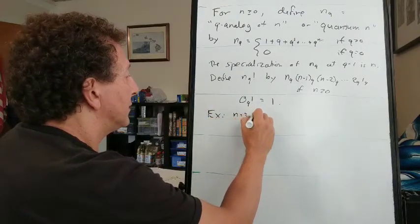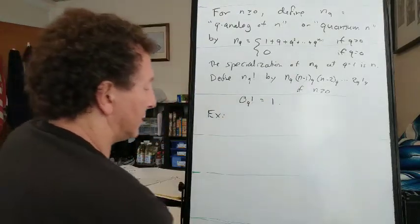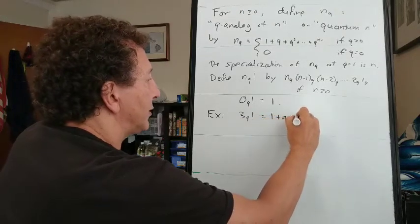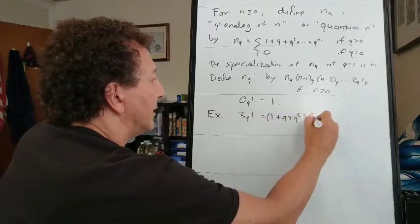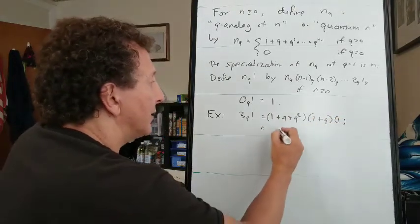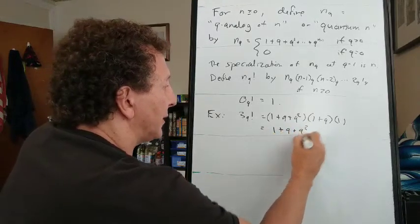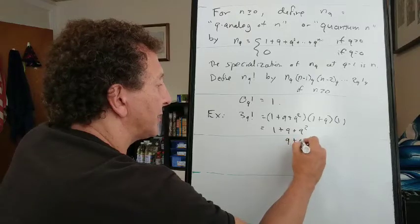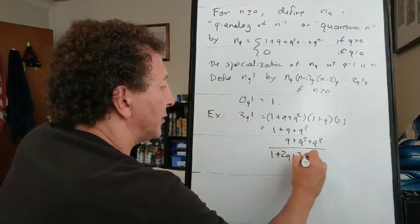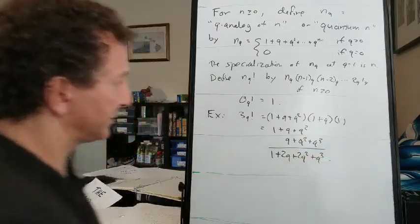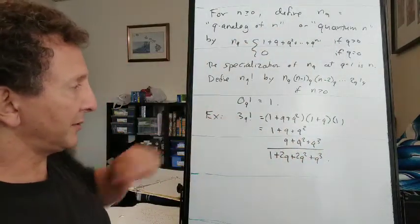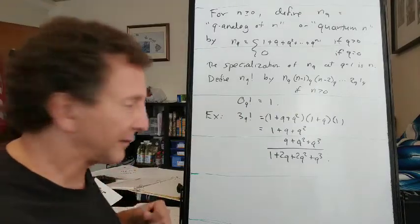So for example, when n equals 3, we have quantum 3 factorial is 1 plus q plus q squared, that's the 3 part, times 1 plus q, that's the 2 part, times 1. So that's 1 plus q plus q squared plus q cubed.